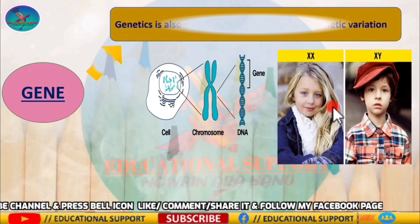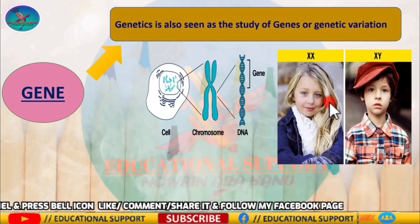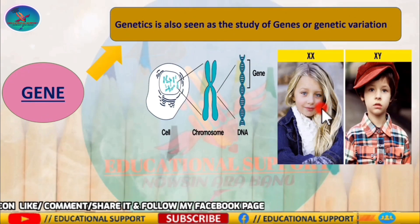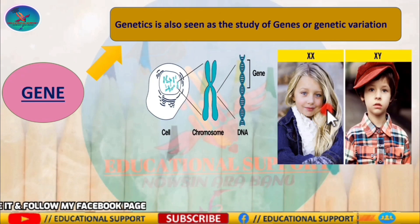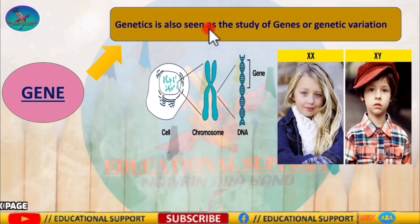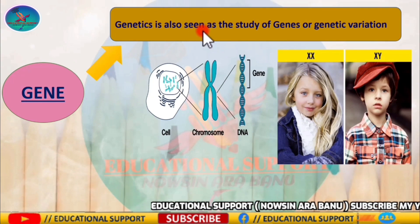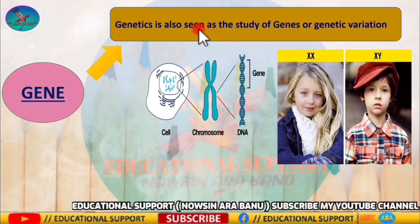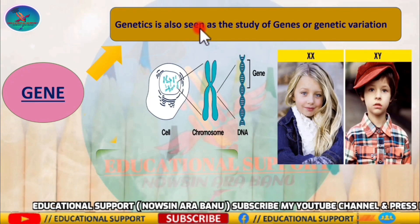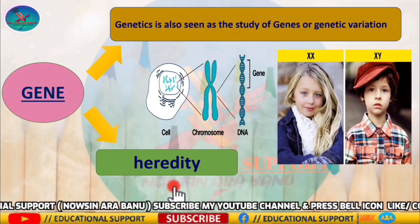Genetics is the study of genes or genetic variation. It is a field of biology that studies how traits are passed from parents to their offspring. The passing of traits from parents to offspring is known as heredity.